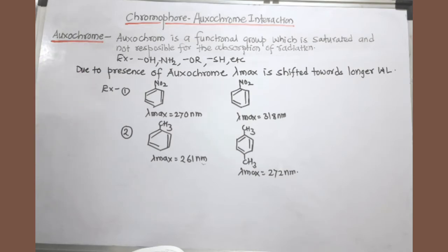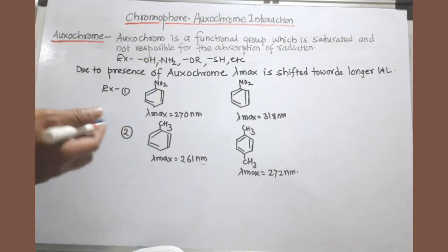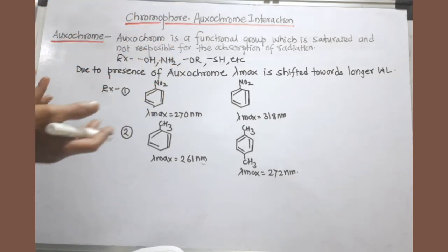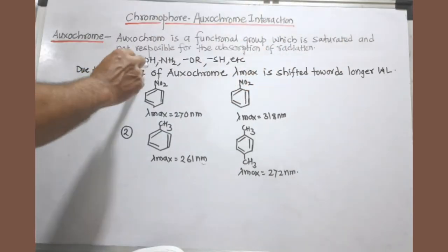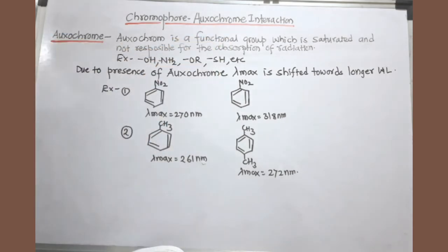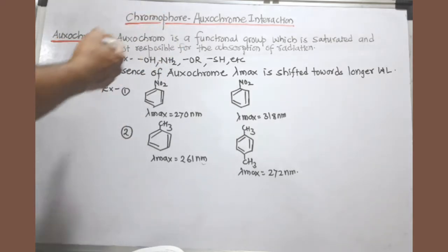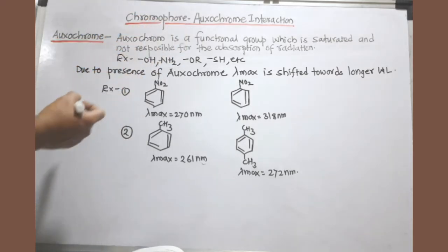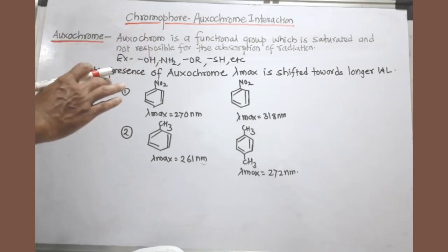Chromophore-auxochrome interaction is another type of interaction observed in UV-visible spectroscopy. An auxochrome is also a functional group, but one where a double bond is not present — where only single bonds are present. Such a group is called a saturated group. Examples include hydroxyl group, amino group, alkoxy group, and thiol group (SH). There is no double bond in these groups.